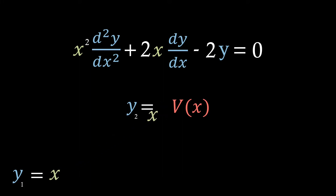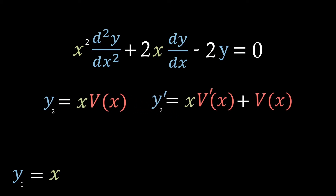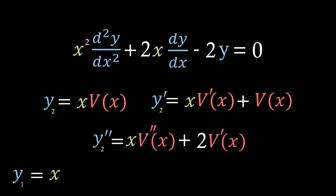Now if we substitute our value of y1 in, we have this expression for y2. To find v of x, we're going to want to substitute this in, so we need to differentiate this twice, where we get these expressions — which you can verify if you fancy — and we can now substitute these into our second order ODE.